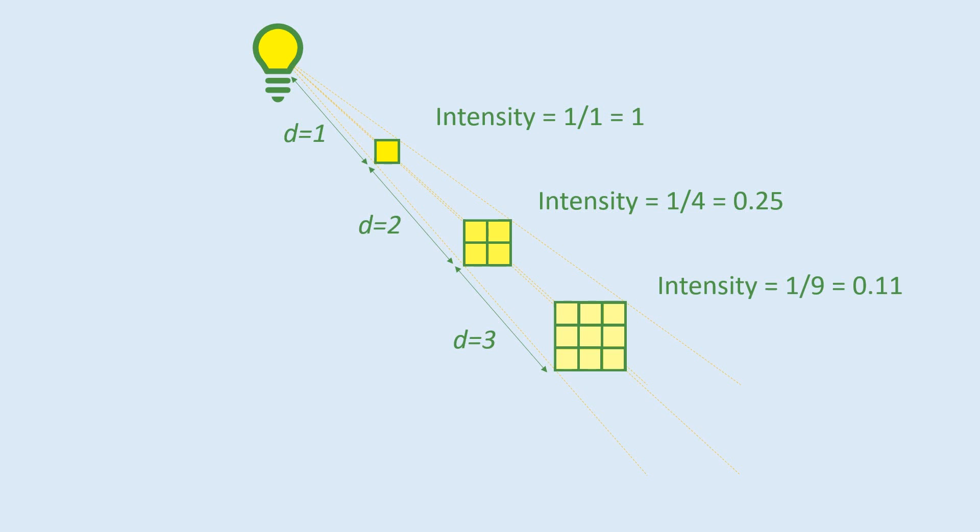And finally, we can think about if we did this again, but this time a distance equals four. Again, the light is going to be even more spread out. And so each individual square will receive less light than previously. Here there are 16 squares. So the intensity is one divided by 16, which rounds to 0.06.